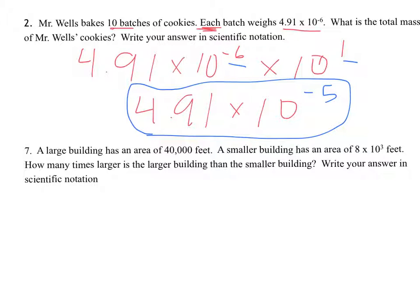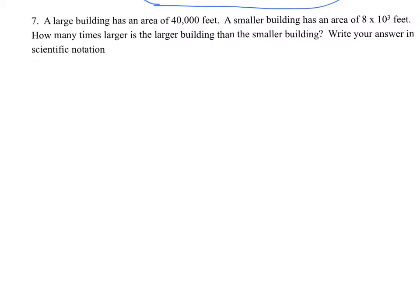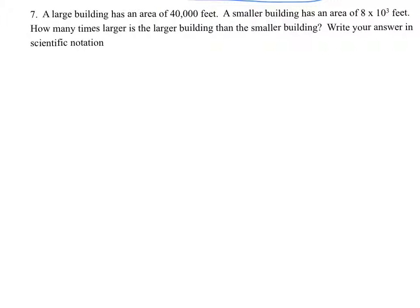Number 7 here. A large building has an area of 40,000 feet. A smaller building has an area of 8 times 10 to the third feet. How many times larger? How many times larger? We're going to talk about this a lot. That's a very important key term for us. How many times larger means to divide.